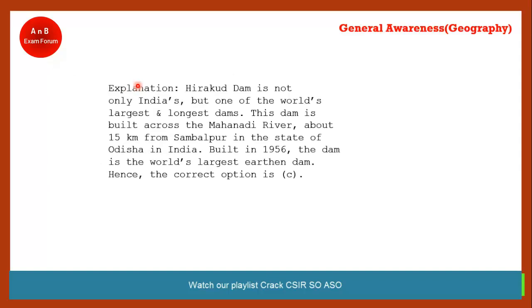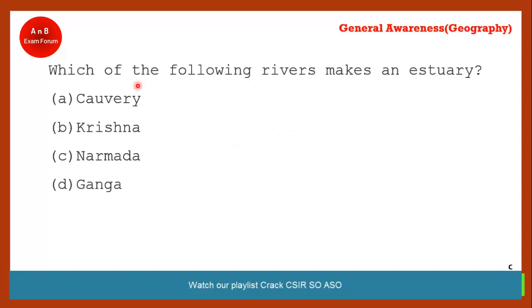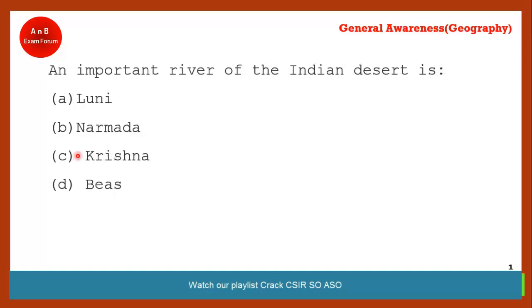Which of the following rivers makes an estuary? The rivers flowing from east to west make estuaries. Krishna, Ganga, and Kaveri all flow from west to east and fall into the Bay of Bengal. The correct answer is option C — Narmada. Narmada and Tapti are the two rivers which make estuaries.